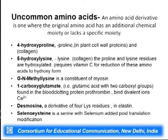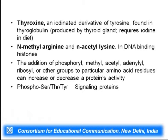5-hydroxylysine synthesis requires vitamin C; without it, scurvy results. N-methyl lysine is a constituent of myosin. 1-carboxyglutamate has two carboxyl groups and is found in prothrombin, where it binds calcium for blood clotting. Desmosine is a derivative of four lysines found in elastin. Selenocysteine is a selenium-containing serine added post-translationally. Thyroxine is an iodinated tyrosine derivative.